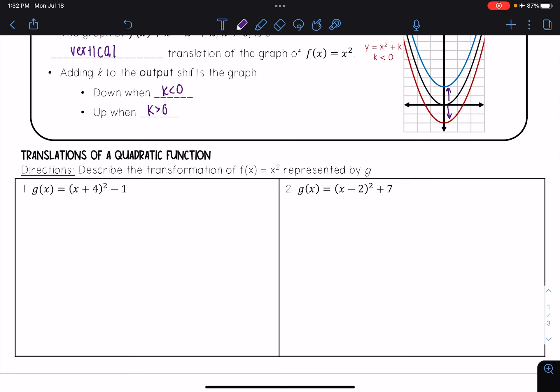Here I have g(x) = (x + 4)² - 1. I'm first going to rewrite it in the form (x - h)² + k. This is really the same thing as g(x) = (x - (-4))² - 1.